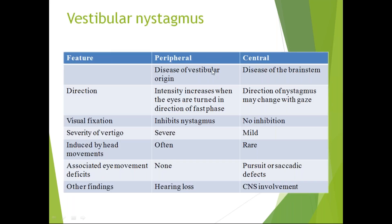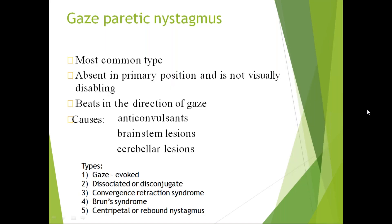Differences between peripheral and central vestibular nystagmus: in peripheral, the lesion is in the vestibular region; in central, it's in the brainstem. Intensity increases when eyes turn in the direction of the fast phase. In peripheral, visual fixation inhibits nystagmus; in central, it does not. Vertigo is very severe in peripheral and mild in central. In peripheral, hearing loss is present because of vestibular origin; the central type does not show this involvement.